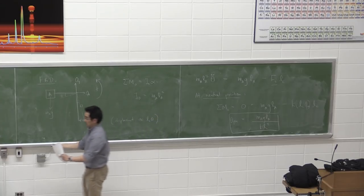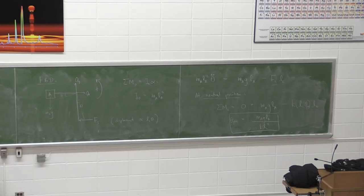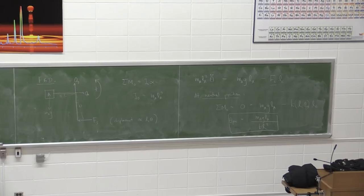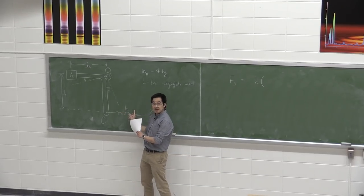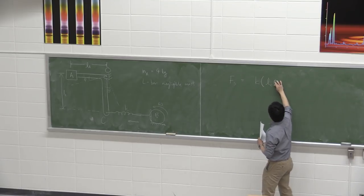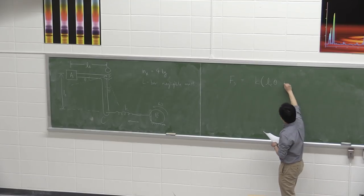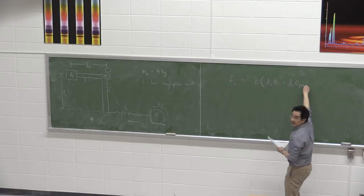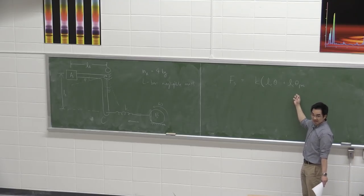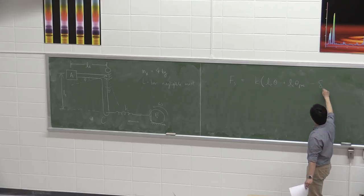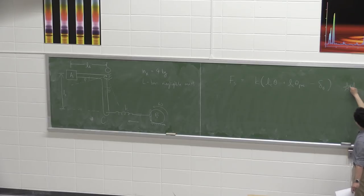The full spring force is Fs = k·[LC·θ + LC·θ_pre − δB]. This is the absolute key to this problem. If the rotor pulls the spring to the right, you account for that with a negative sign — it's less compression if the support moves away. That's the critical insight.